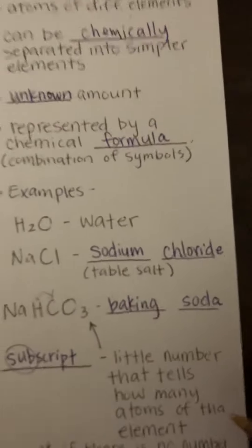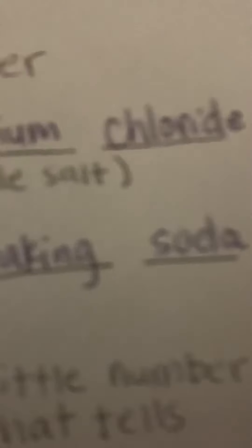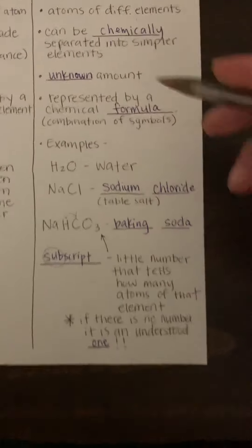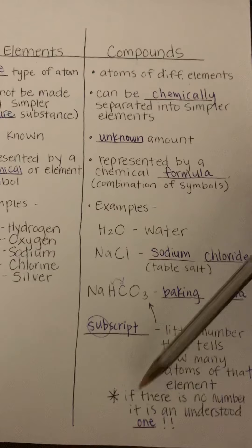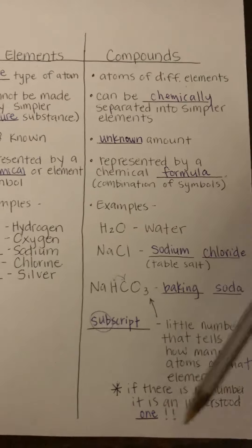that little number tells you how many atoms of that element. And I can see that my copy... let me fix that real quick. I'm sorry, we're going to have to zoom in. Okay, the copy didn't cut off the T. So if there is no number there, then it's an understood one.